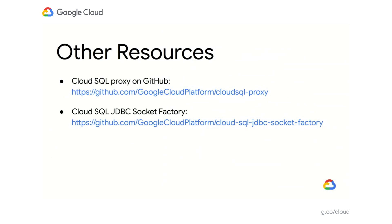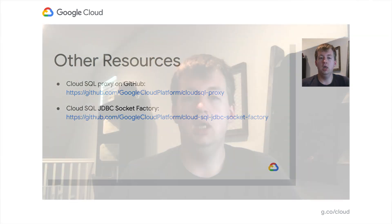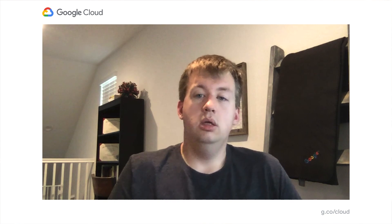If you're interested in learning more, here are some additional resources. The first is the Cloud SQL proxy, which is open source, written in Go, and available on GitHub. The second is the Cloud SQL JDBC socket factory, which Java users can use to connect directly to Cloud SQL without using the proxy in a similar manner. Please take a look at the repos, and if you encounter any issues, please open an issue on GitHub and let us know. Thanks for watching, and have a great day.